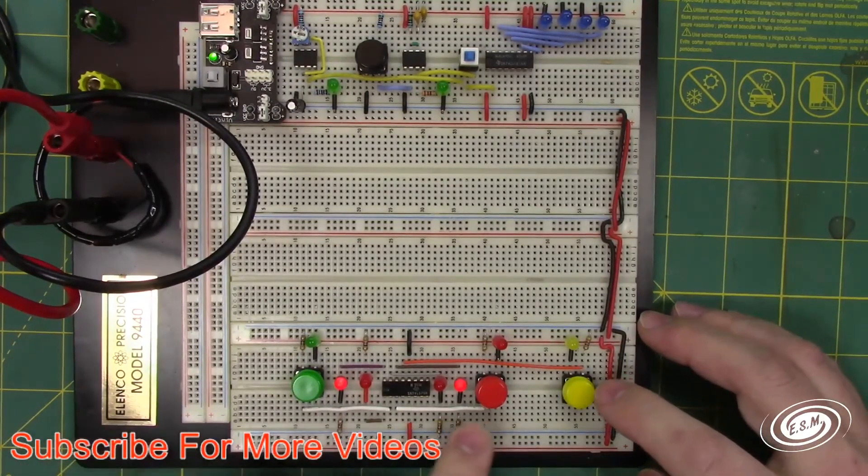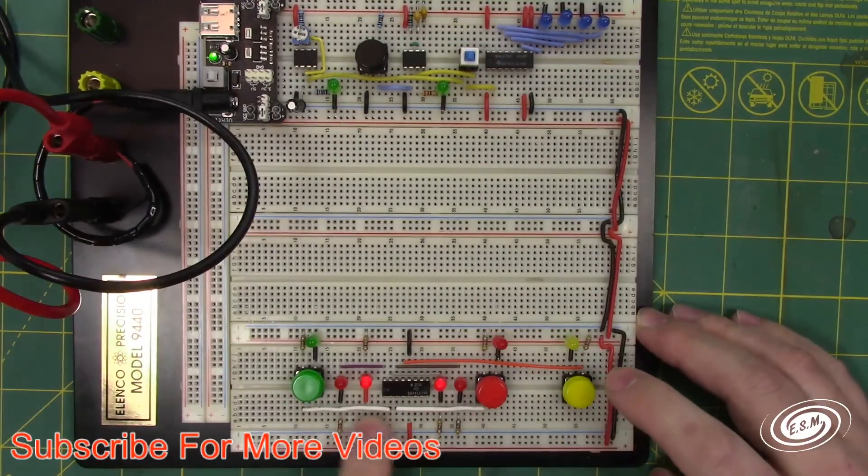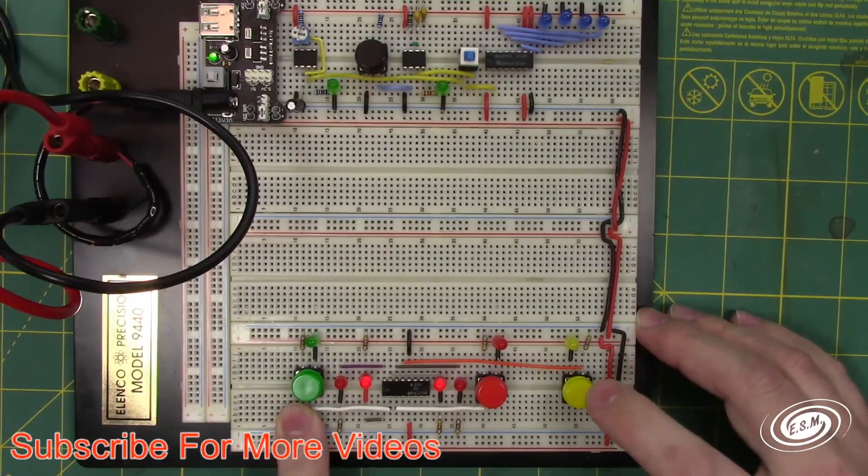Now if I want to latch this one and latch this one, I just hold this and press this. But if you notice, this one dropped its latch, because this one was no longer latched when I pressed this button.